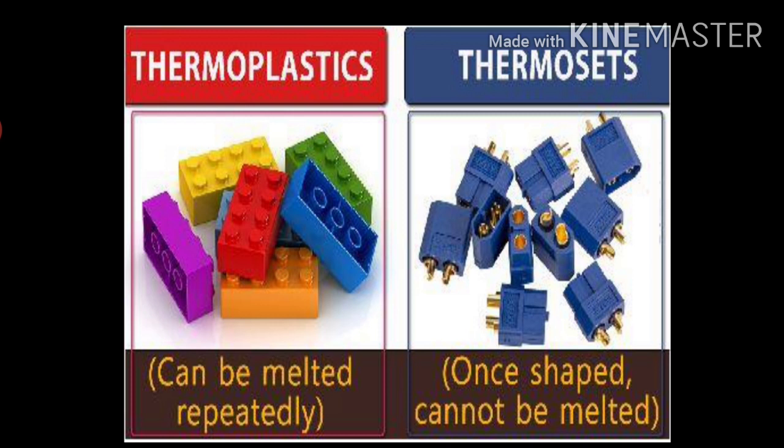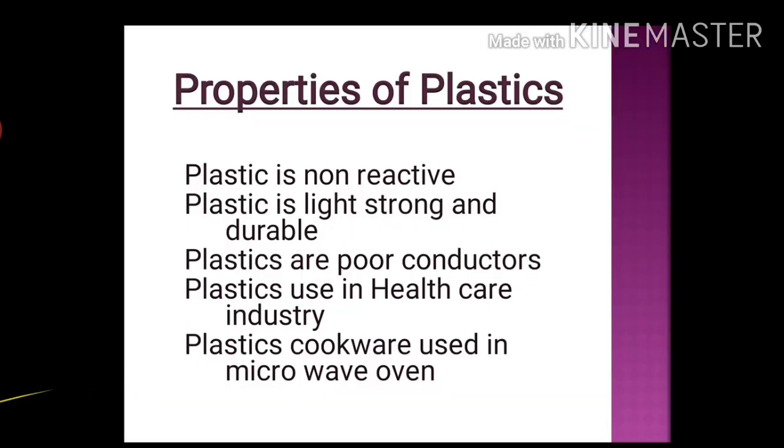Now let us proceed properties of the plastics. First property is plastic is non-reactive. You know the metals like iron get rusted when left exposed to moisture and air. But plastic do not react with water and air. They are not corroded easily. That is why they are used to store food items, water, milk, pickle, dry fruit and many chemicals.